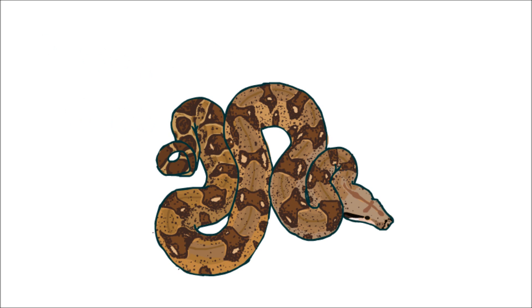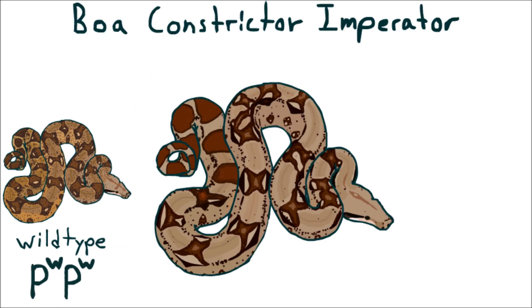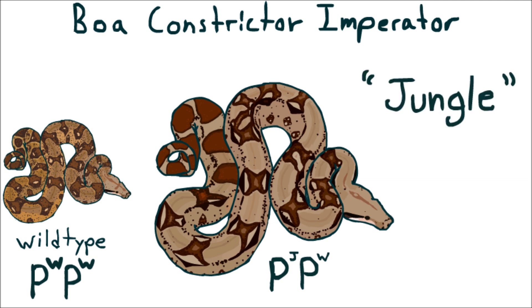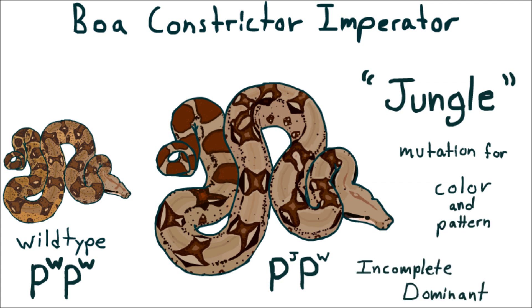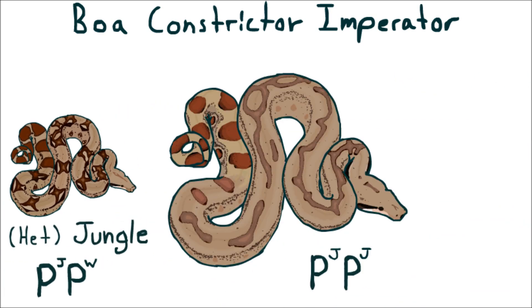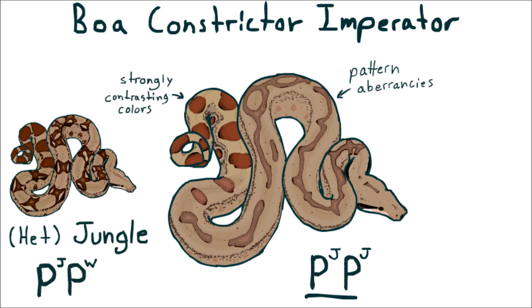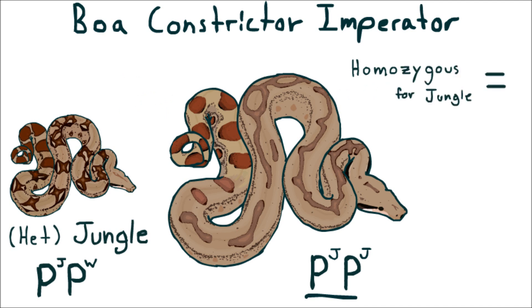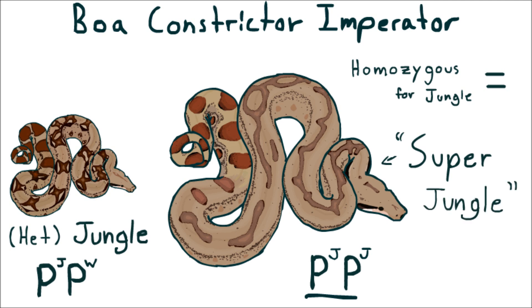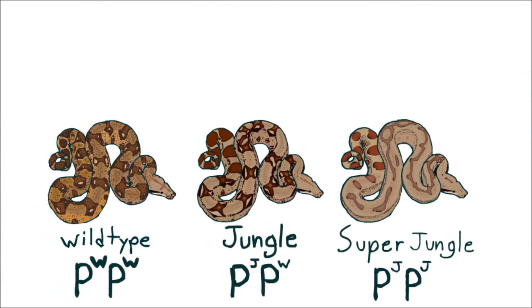Example time! This is a genotypically normal boa constrictor imperator. And this is a boa that is heterozygous for what's called the jungle morph. The jungle allele contains a very neat mutation for color and pattern that is incomplete dominant to wild type. So this snake has one wild type allele and one jungle allele — both expressing themselves in this pretty blend that we see. The third possible genotype is homozygous for the jungle trait, with two jungle alleles. It has a much stronger expression of the jungle trait with no wild type allele to compete. Breeders label individuals like this as super — this is a super jungle. The heterozygous snake is just a jungle.